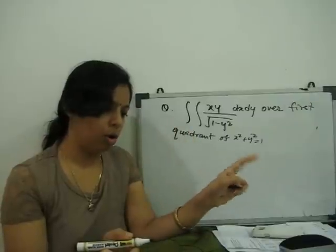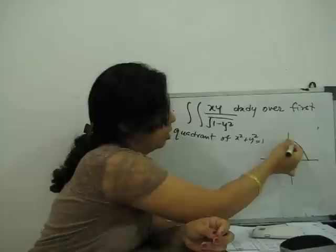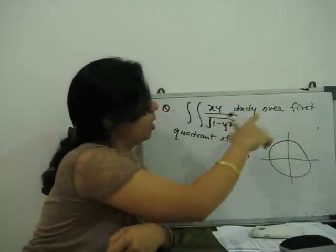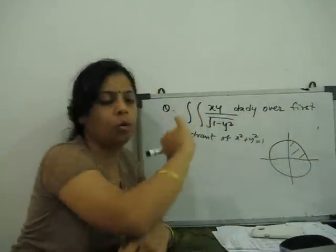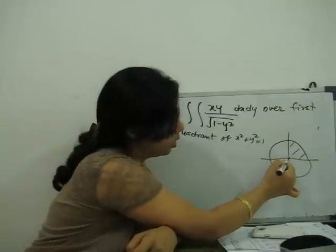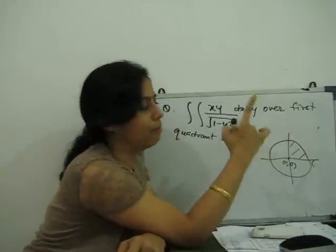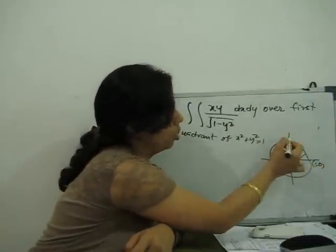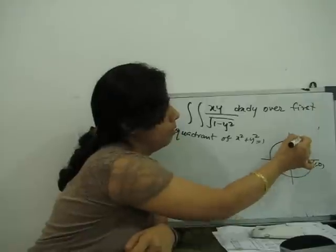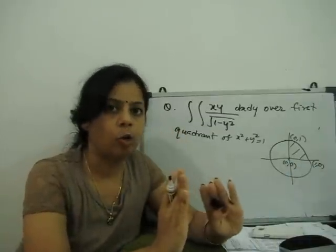Now we have to know the equation of the circle. Now we plot. This is the circle. First quadrant is this part. This is point 0, 0 and this point, the radius of this is 1. So this point is 1, 0. This point is 0, 1. When we want to find out the limit, we make a strip.